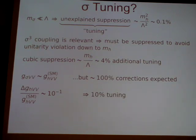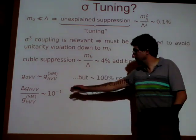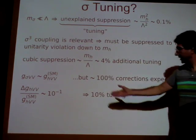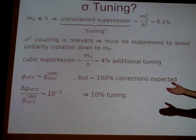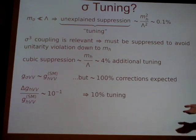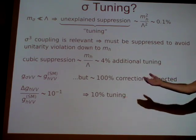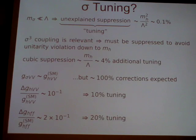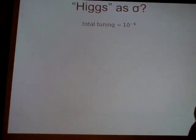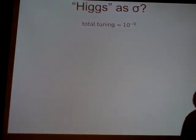You also have to account for the fact that the observed Higgs couplings are close to the standard model values. The Higgs coupling to vectors is measured to 10%; this theory predicts that the order of magnitude of that coupling is right, but there should be an order 100% correction. So this is a 10% tuning, and there's about a 20% tuning in the fermion couplings. All of these are independent accidents — they could have happened one without the other — and so the total tuning is about 10^{-6}, one in a million if you put it all together.